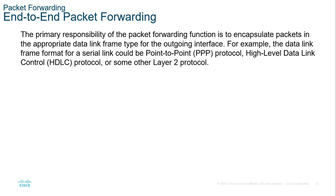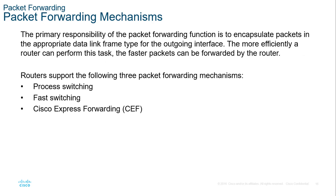The primary responsibility of the packet forwarding function is to encapsulate packets in the appropriate data link frame type. Ethernet is just one of the layer 2 networks — a data link frame format could be serial point-to-point, HDLC (High-Level Data Link Control), frame relay, or others. Most of what we learn about will be Ethernet frames, but they are not the only ones. The three main packet forwarding mechanisms are process switching, fast switching, and Cisco Express Forwarding. We discussed these in detail when talking about switching, but they also apply for packets.